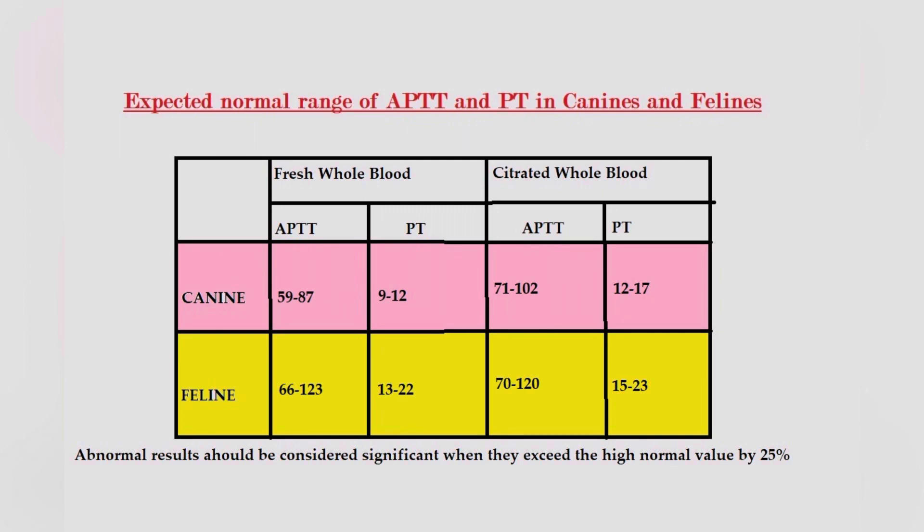The normal APTT value in canine blood is between 71 to 102 seconds, and the PT value is around 12 to 17 seconds. We consider a result abnormal when the value obtained is more than 25% above the high normal value.